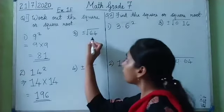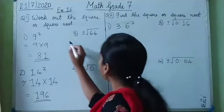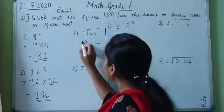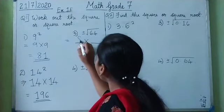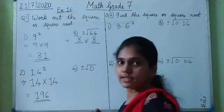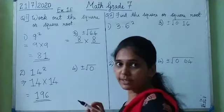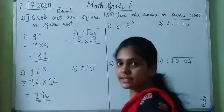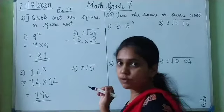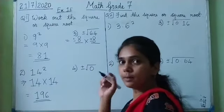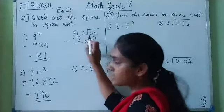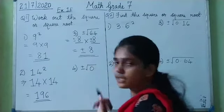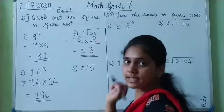Now we have to find the square root of 64. Which number multiplied by itself gives me 64? It is 8. 8 into 8 is 64. So I write 8 multiplied by 8 is 64. This is plus or minus, so I write plus 8 or minus 8. Plus 8 into plus 8 gives me plus 64, or minus 8 into minus 8 gives me plus 64. So the plus or minus square root of 64 is plus or minus 8.